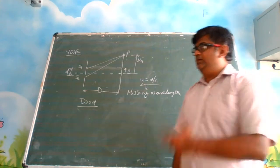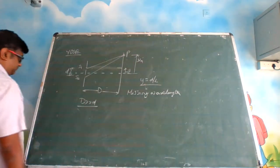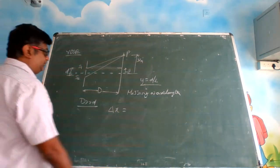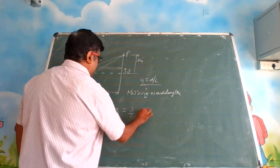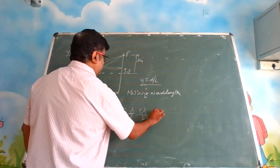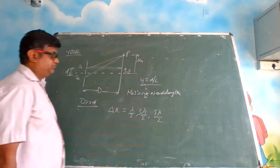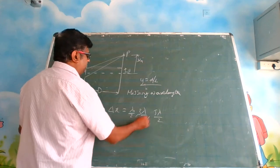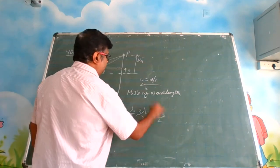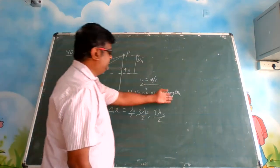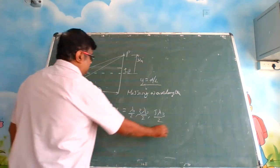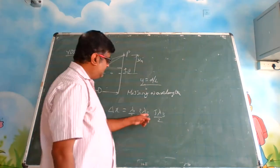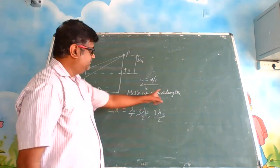Dark interference occurs when the path difference is lambda by 2, 3 lambda by 2, 5 lambda by 2, and so on. So delta x equals lambda-1 by 2, 3 lambda-2 by 2, 5 lambda-3 by 2 — we are finding the missing wavelengths. When the path difference follows this pattern, all these wavelengths lambda 1, lambda 2, lambda 3, and so on, are missing wavelengths.